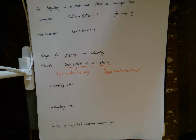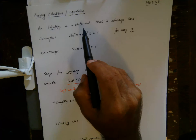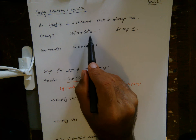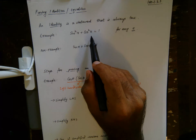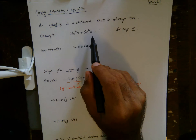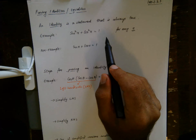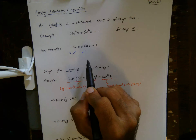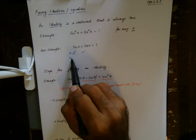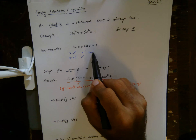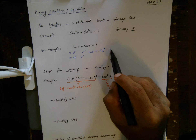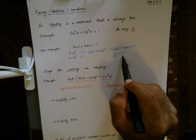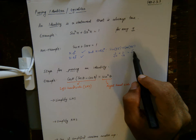We've been using the word 'identity' — but what really is an identity? In mathematics, a statement that is always true is called an identity. For example, sin²(x) + cos²(x) = 1 is true for any angle x. A non-example would be sin(x) + cos(x) = 1. It's true when x = 0° and when x = 90°, but when x = 45°, sin(45°) + cos(45°) = 1/√2 + 1/√2 = √2, which does not equal 1.